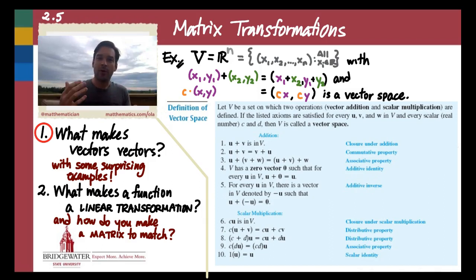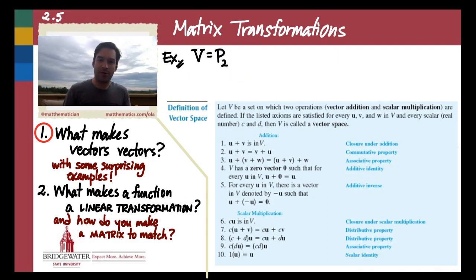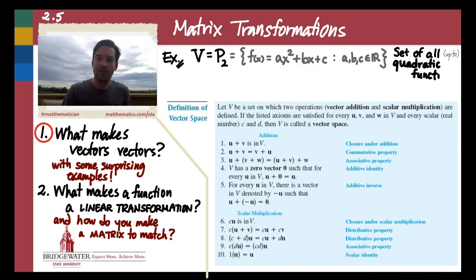But there is a lot more in heaven and earth than is dreamt of in the Euclidean spaces R^n. Here's an example of something that might not seem like a vector space in the beginning. It's called P₂, and we call it the set of quadratic polynomial functions. So it's defined as the set of functions that take the form ax² + bx + c, where a, b, and c are chosen from among the real numbers.